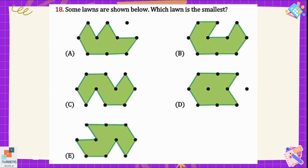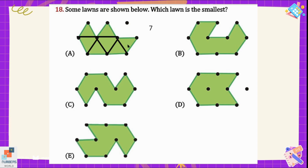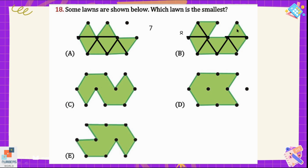Question number 18: some lawns are shown below — which lawn is the smallest? To find the smallest lawn we can draw triangles in the given green areas. In option A there are 7 triangles. In option B, after drawing triangles, we can find 8 triangles.